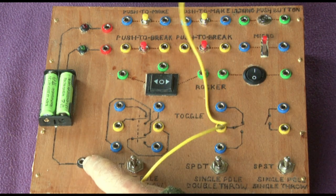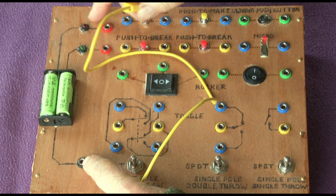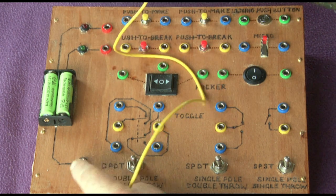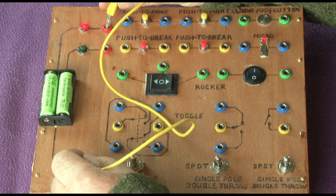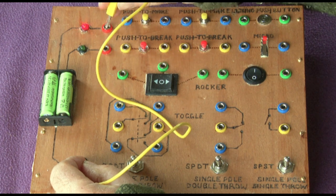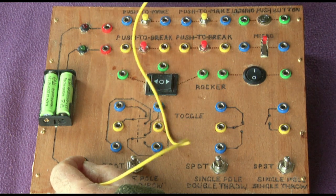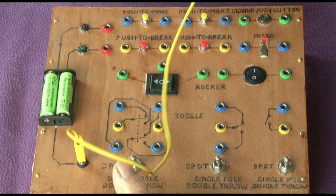We've got the negative of the supply here and the positive goes through these two LED bulbs. So if we connect them up the lights will come on, but rather than just connect them direct we're going to connect them via some switches.